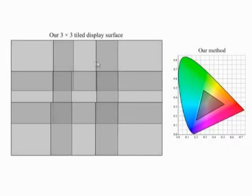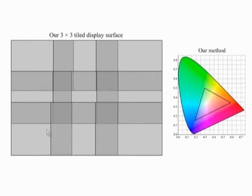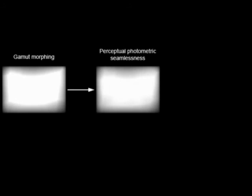Here we visualize the chrominance gamut and the brightness of our display after our correction procedure has been completed. Note that the chrominance gamut and the brightness now vary smoothly across the display. Since both our brightness and chrominance morphing is achieved by controlling only the brightness of each projector, our correction can be achieved with only per-projector brightness attenuation maps. Thus each step of our method generates an attenuation map for each projector.